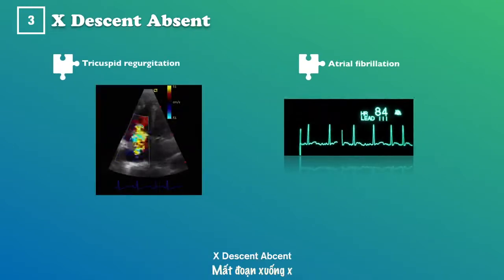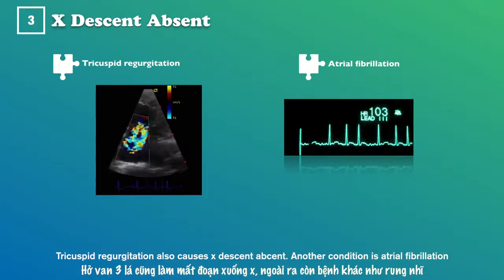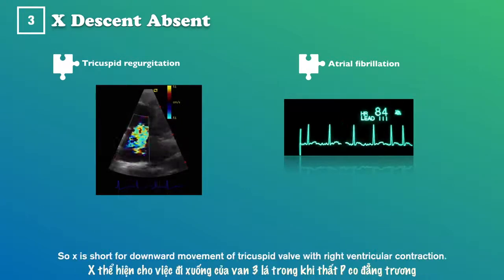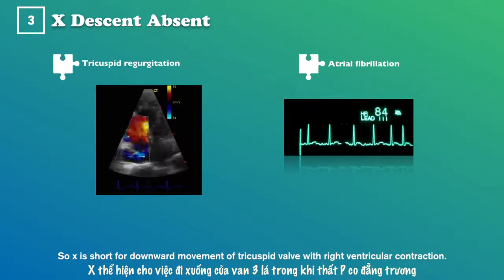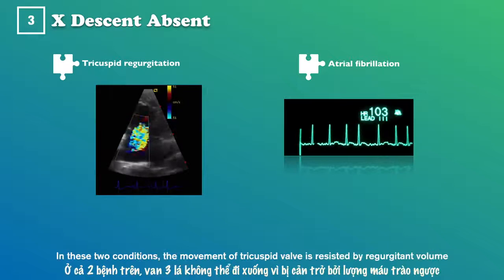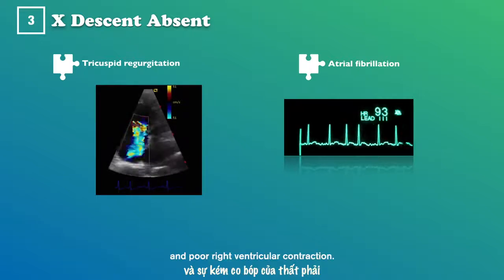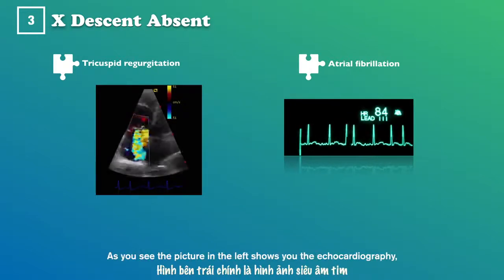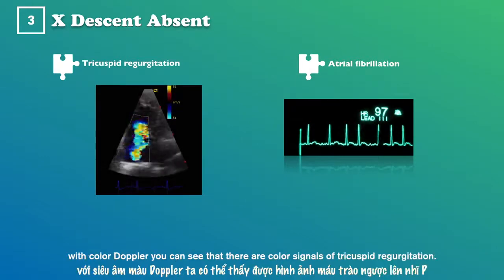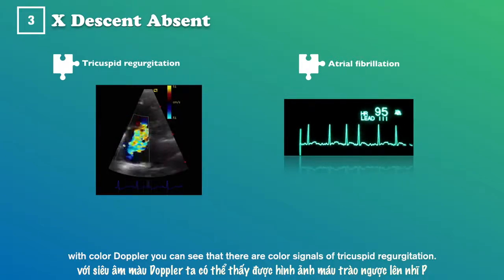X-descent absent is also caused by tricuspid regurgitation, as well as atrial fibrillation. X represents the downward movement of the tricuspid valve with right ventricular contraction. In these two conditions, movement of the tricuspid valve is resisted by regurgitant volume and poor right ventricular contraction. On echocardiography with color Doppler, you can see color signals indicating tricuspid regurgitation.